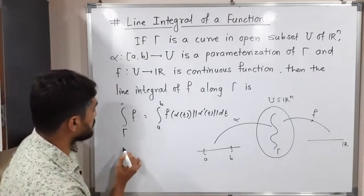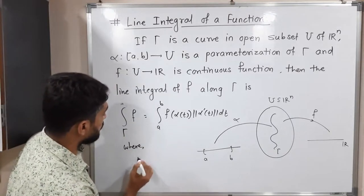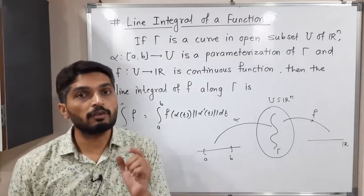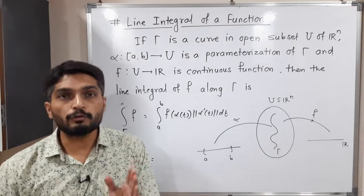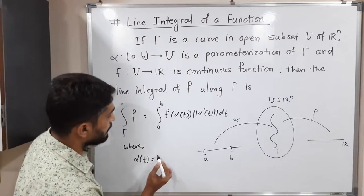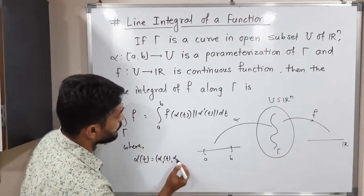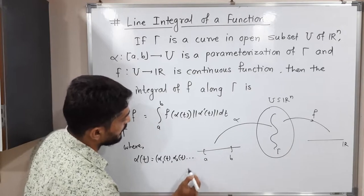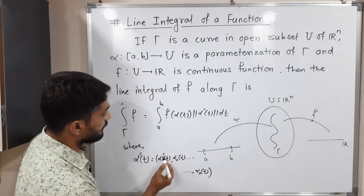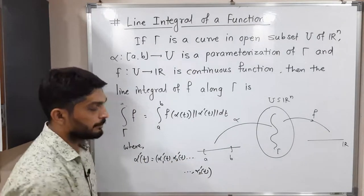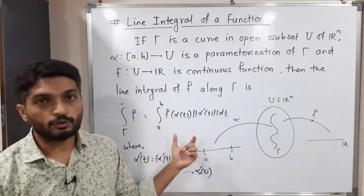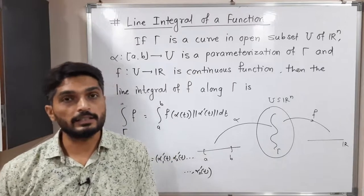Now, note that alpha maps the closed interval [A, B] to U, where U is a subset of Rn. That means the co-domain of alpha is Rn, and it will have n components: alpha-1(T), alpha-2(T), and so on up to alpha-n(T). When we take its derivative, each component is differentiated, giving alpha-dash(T). Using this definition, we find the value of the line integral of any scalar field.